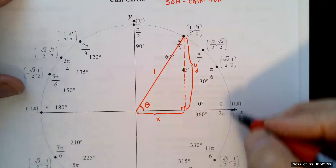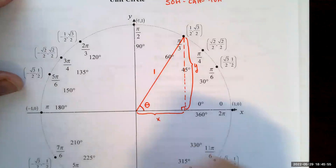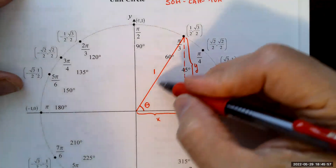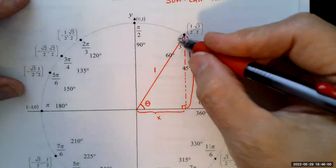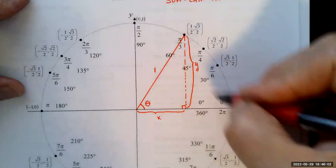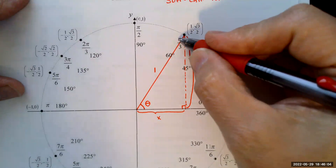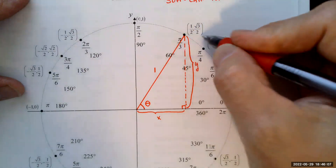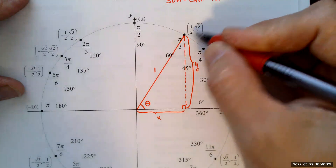Going all the way around the circle is 360 degrees or 2π radians. So 60 degrees is one-sixth of the way around, and one-sixth of 2π is 2π/6, or π/3. That's the y-coordinate — that's the sine.